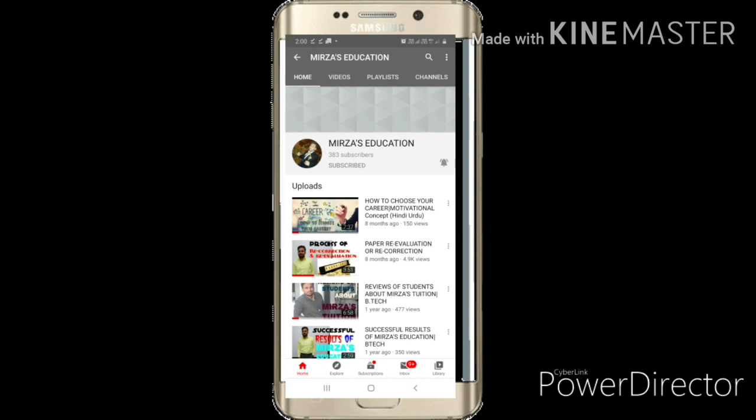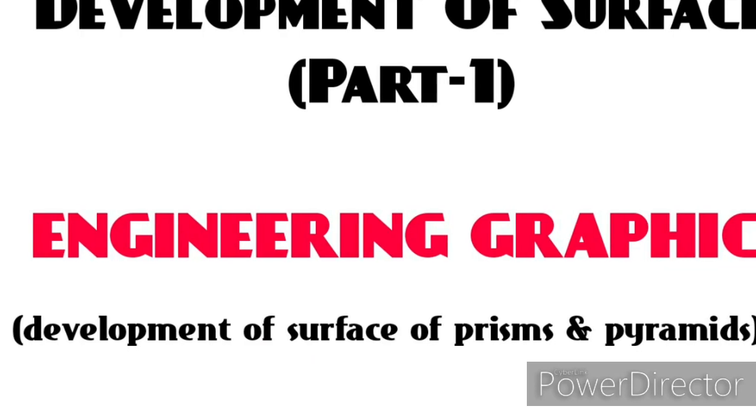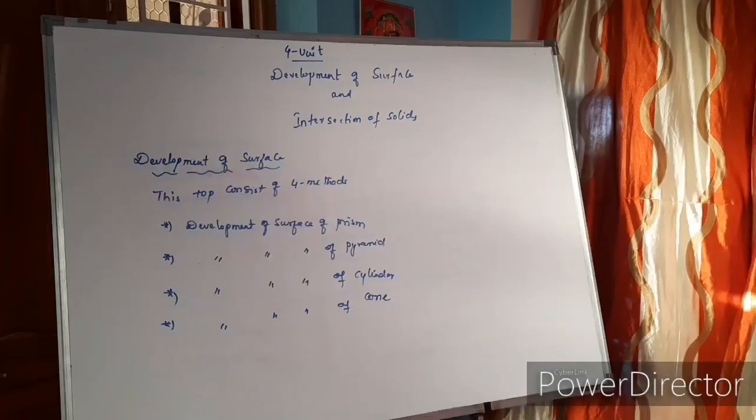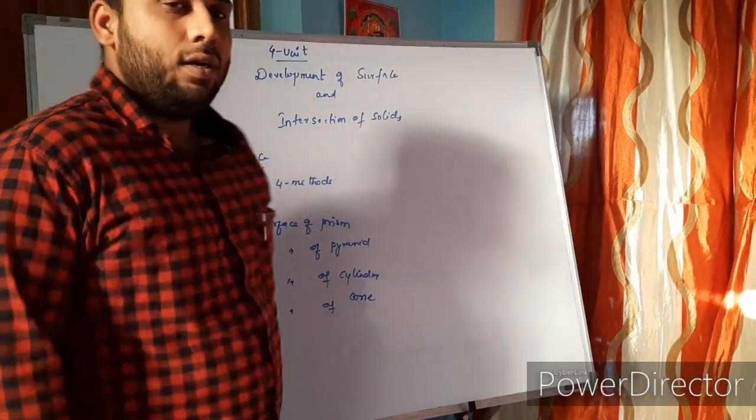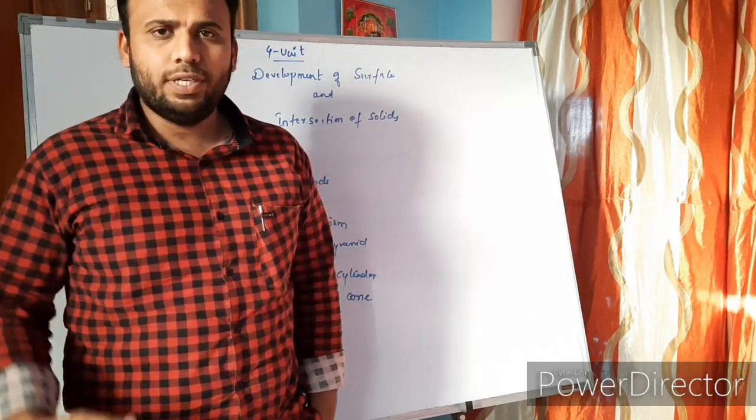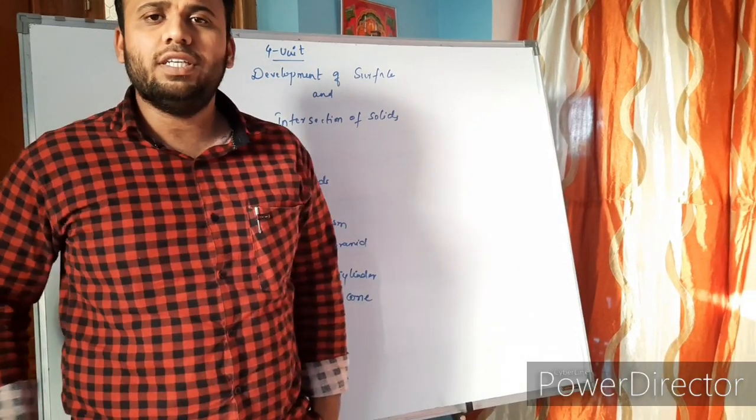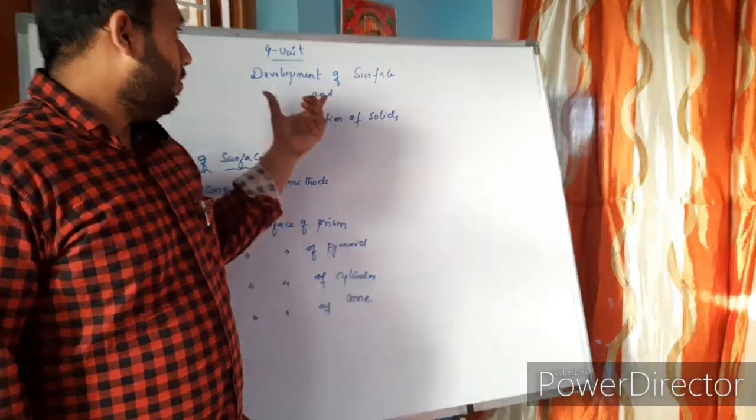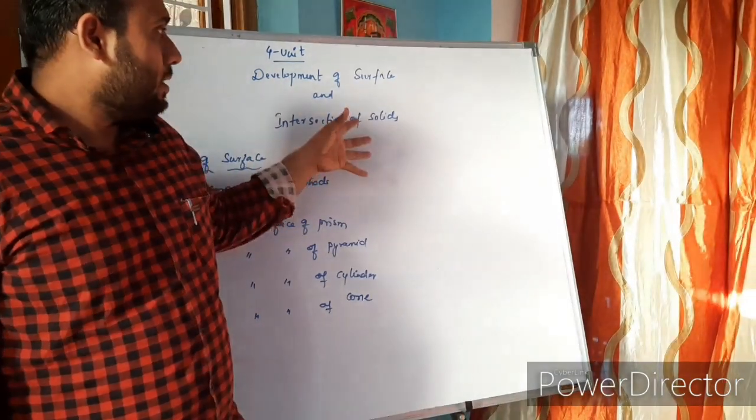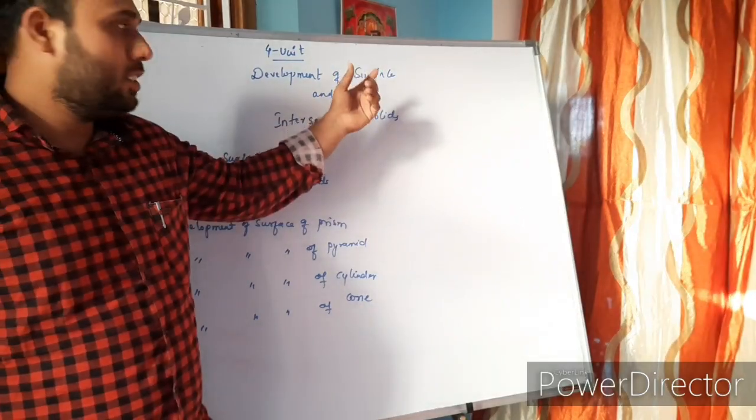Subscribe to Mirza's Education and press the bell icon for every notification. Hello everyone, again here with a new concept video. This is the fourth chapter of engineering graphics: development of surface and intersection of solids. This chapter must be taught in two topics, with one question from each topic in your examination.